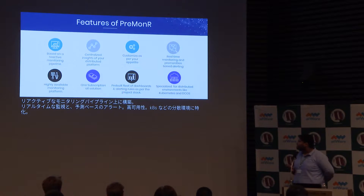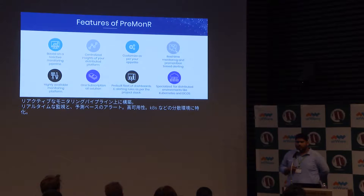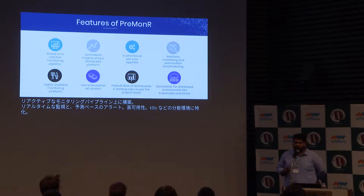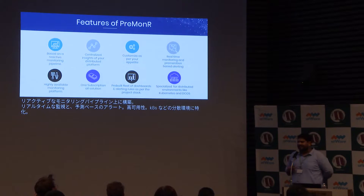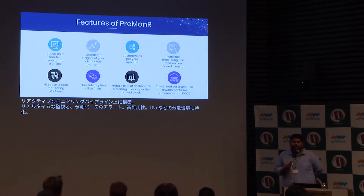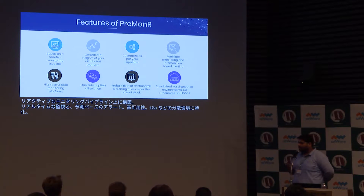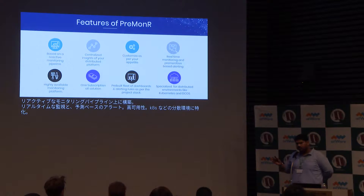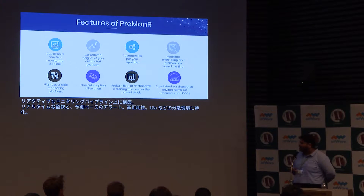Then it's one subscription, all solution. There's a pre-built fleet of dashboards and alerting rules as per the project stack — for technologies like Spring Boot, Lagom, Akka HTTP, Play, Elasticsearch, DGraph, and Kafka, we provide pre-built dashboards and alerting rules as per industry standards. For example, in a certain application, I must always keep my heap size above a minimum — if its availability goes below 80%, it should proactively alert me.